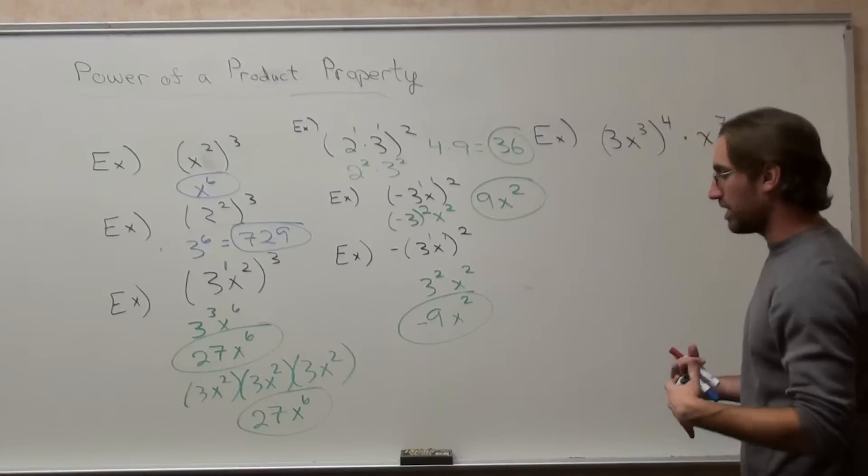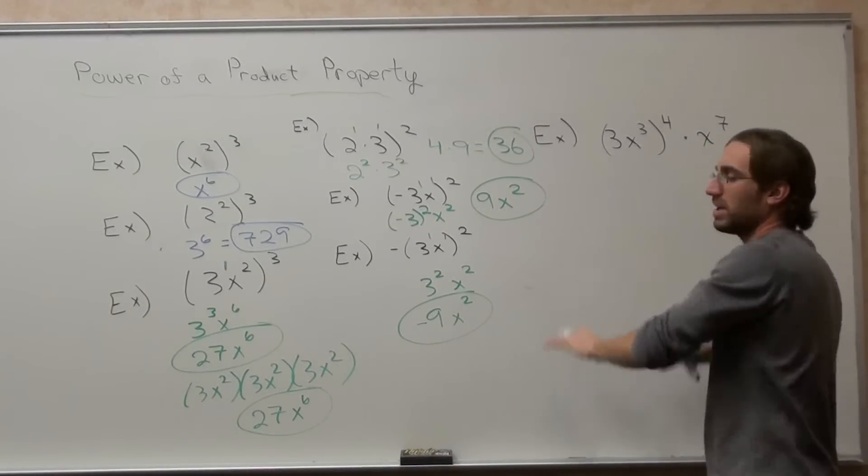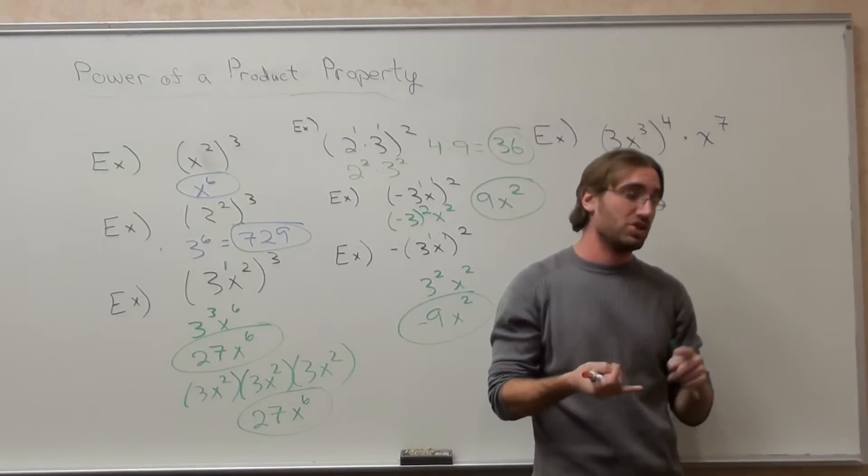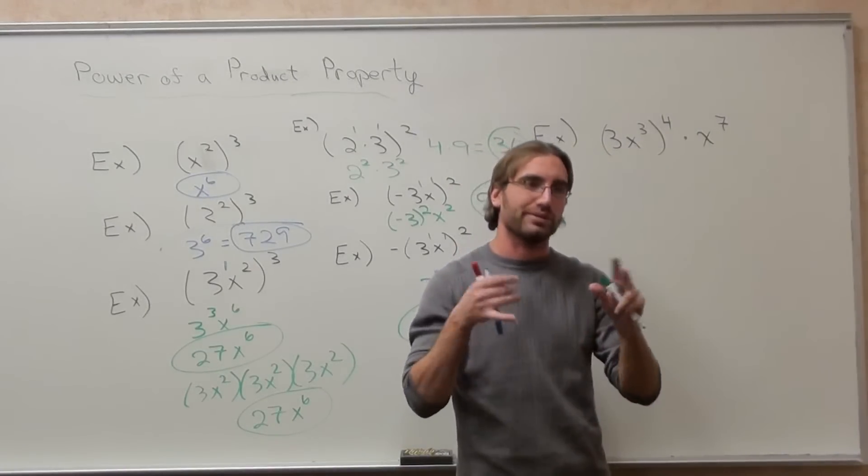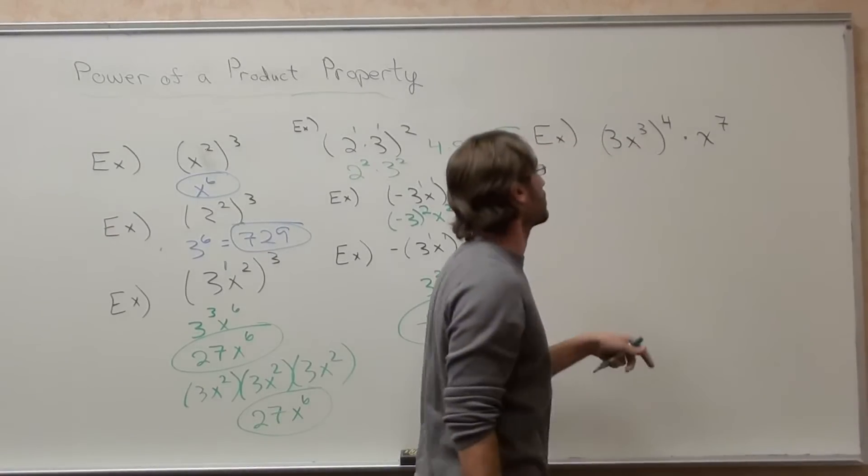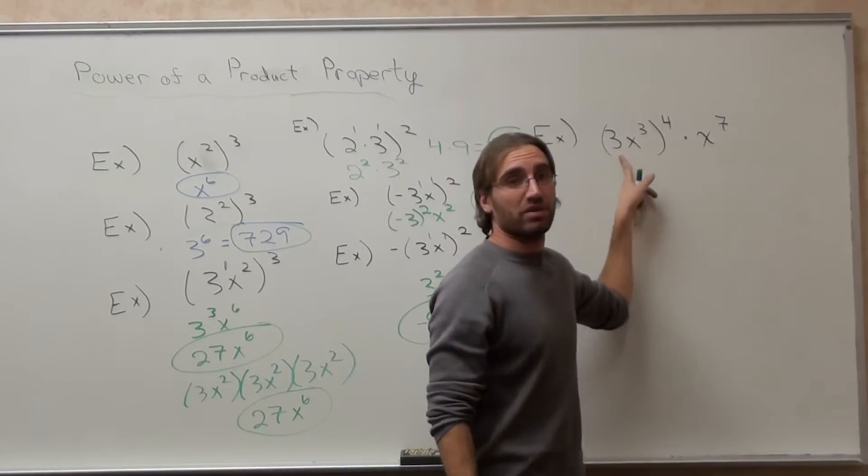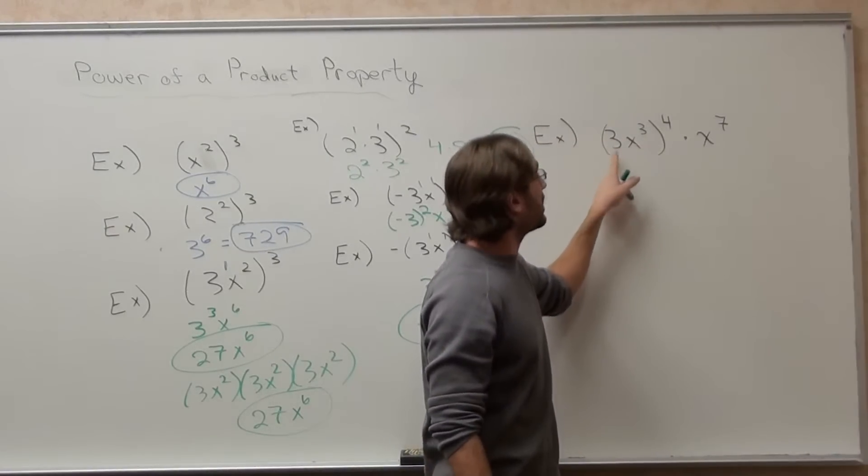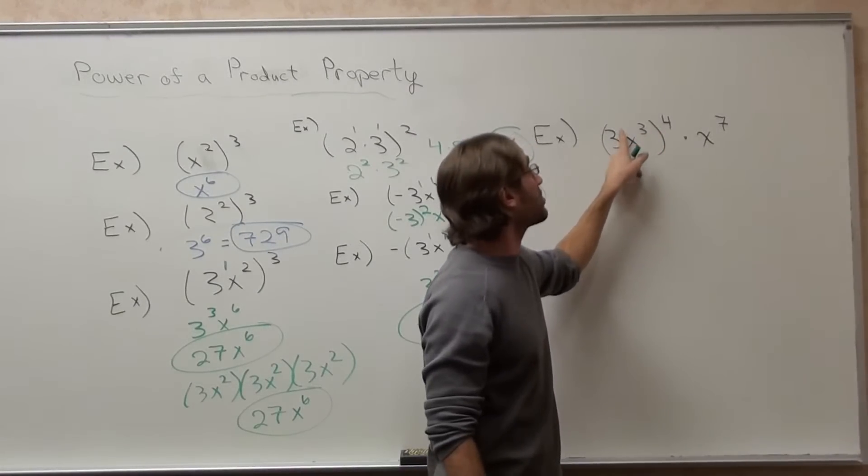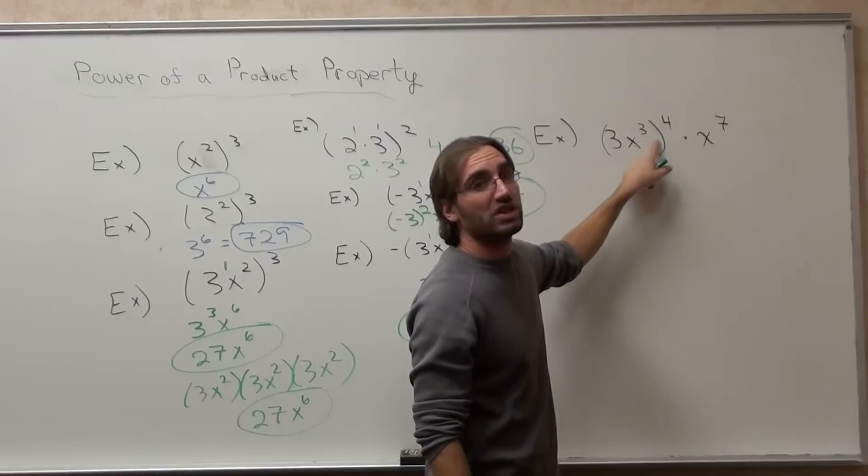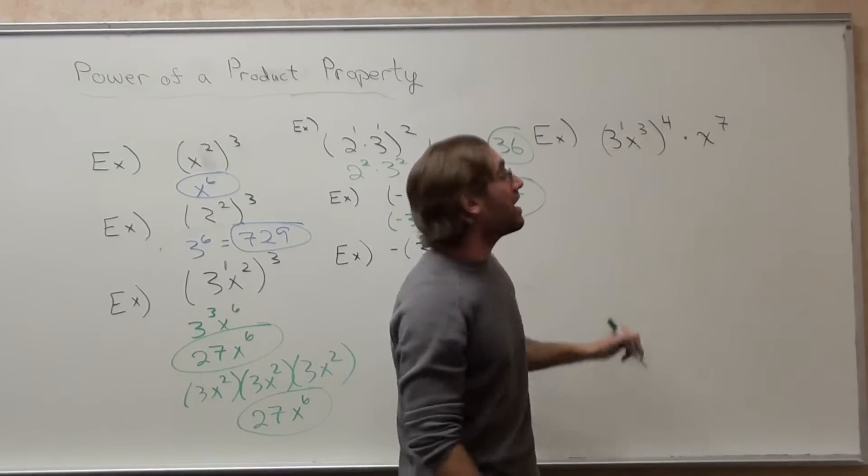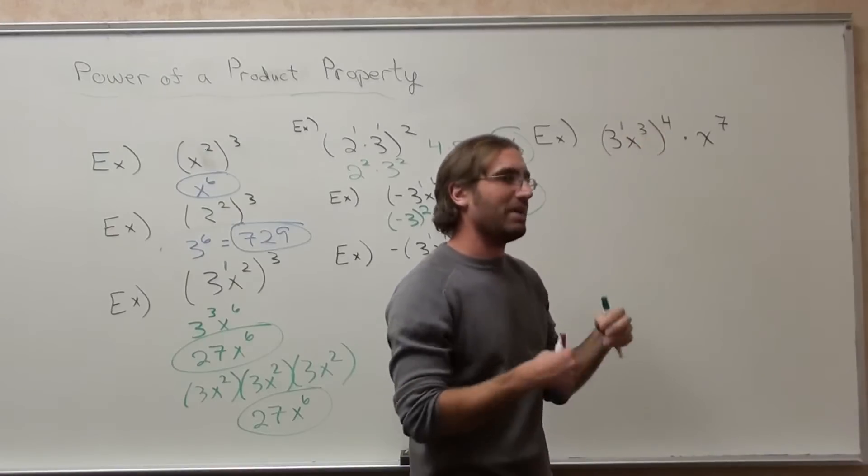We've done three types of properties, and I want to go ahead and put up a problem here that incorporates those three properties. We're going to do this one. What's the exponent on top of the 3? This reads quantity of 3x cubed to the power of 4 times x to the 7th. The exponent on top of this 3 is not this 3, that belongs to the x. Since there is no exponent, you put a 1. Now, you're going to multiply these because it's a power of power.